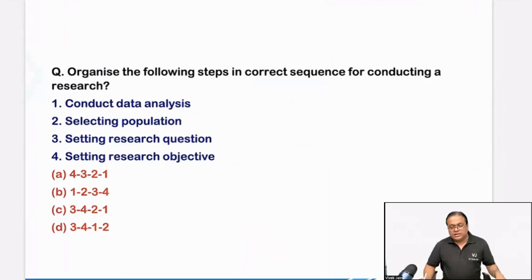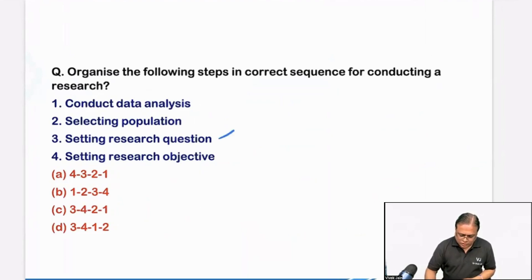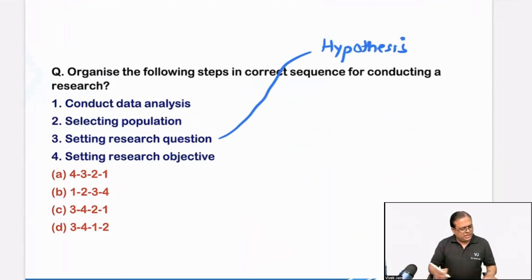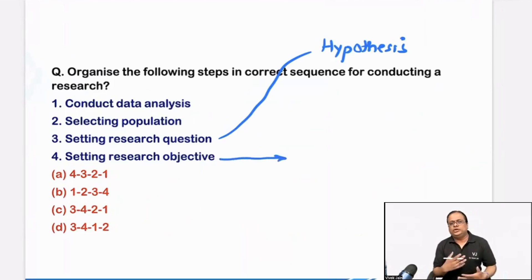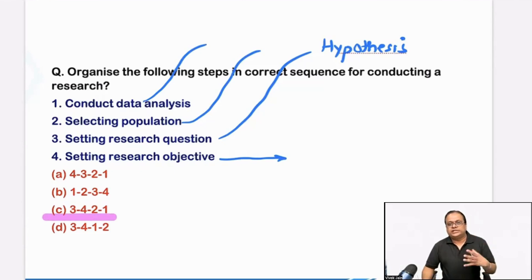Question three: organize the following steps in correct sequence. Again, I should say this was one of the easy questions. Remember when we discussed the classification of epidemiological studies, the first thing I always mentioned was: make a hypothesis — possibly smoking is the cause of lung cancer. Then you draw your research objective and design: should I take a cohort study, case control, cross-sectional, or ecological? Then select your population, and finally do data analysis. So choice number C. Your research study always starts with a research question, then you proceed forward with the study design.